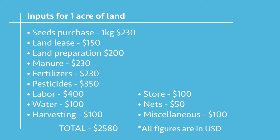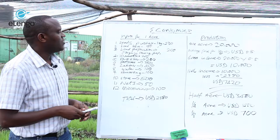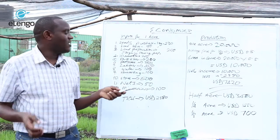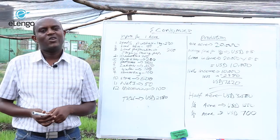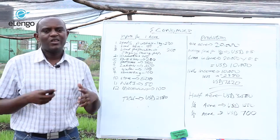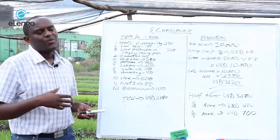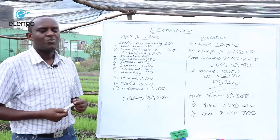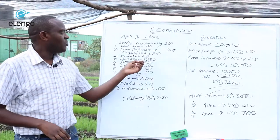For the land preparation, you may find that you are in a venture with two of you and decide to do the land preparation yourselves, or maybe you own a tractor, so that cost may also go down. For manuring, it is costing $200 US dollars, but you may find you can get manure cheaply within your locality, or maybe within your home you have compost manure ready, so this cost may also go down.